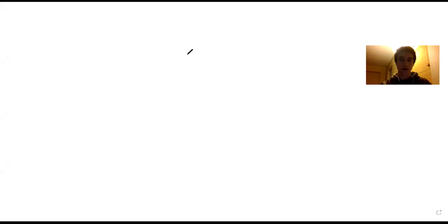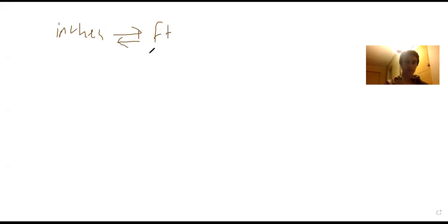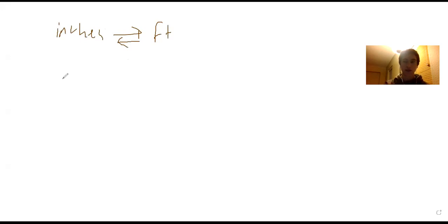This is called dimensional analysis. Dimensional analysis is a way to switch units — like going from inches to feet or vice versa, feet to inches. You can also go from seconds to minutes, or minutes to hours and back. The way you do that is by manipulating the units to cancel them out.